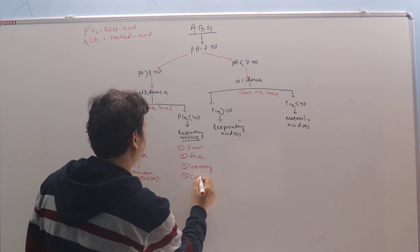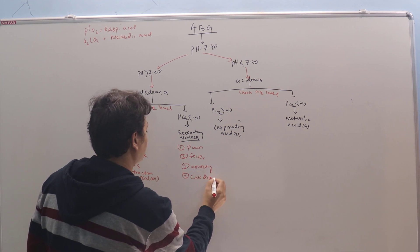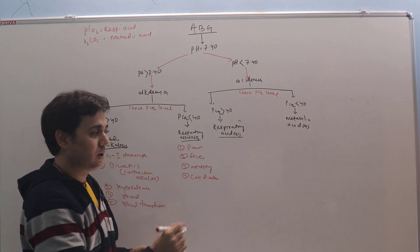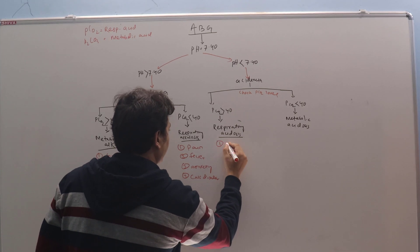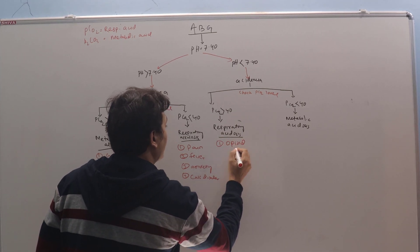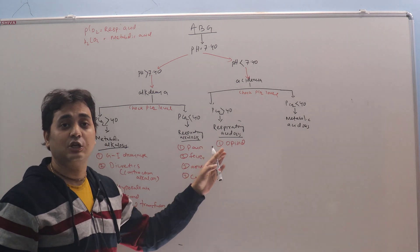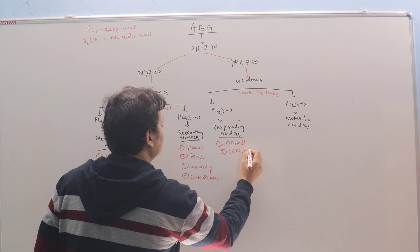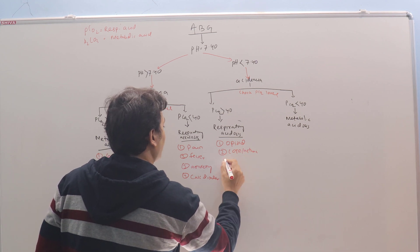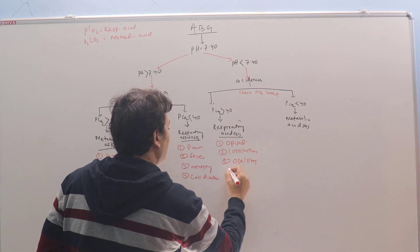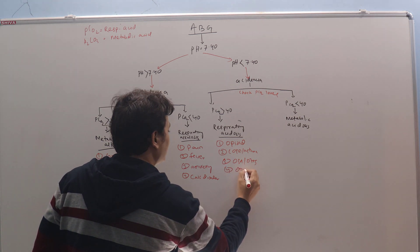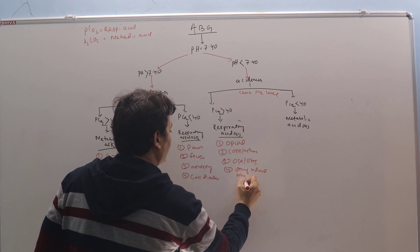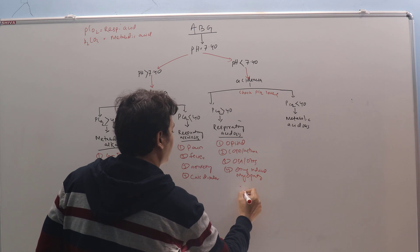What are the most common causes of respiratory acidosis? Number one, opioids is very, very common in ICU. So we have to check for the drug list of the patient, whether that patient is getting any opioid or not. Second will be COPD, asthma. Third will be OSA, OHS, or drug-induced myopathy, and so forth.